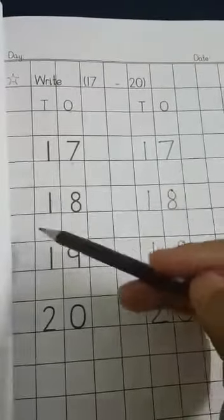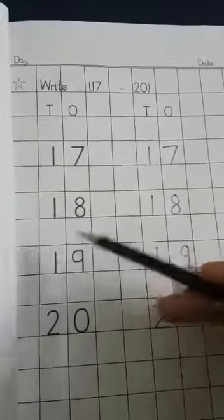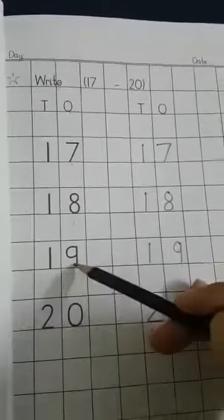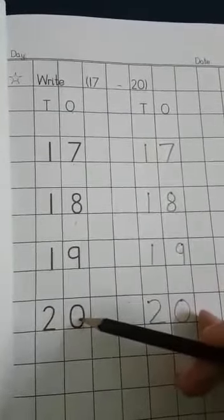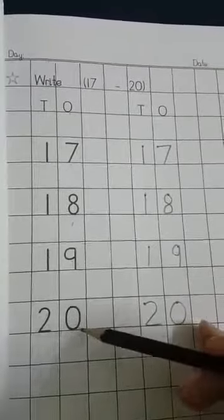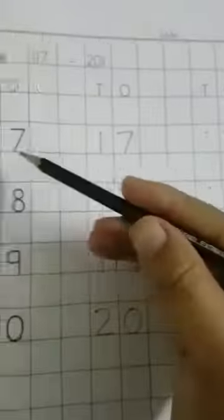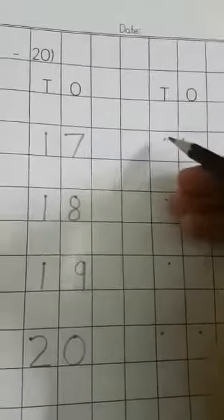1 and 7, 17. 1 and 8 makes 18. 1 and 9 makes 19. And 2 and 0 makes 20. Start reading again and again and again and then practice here.